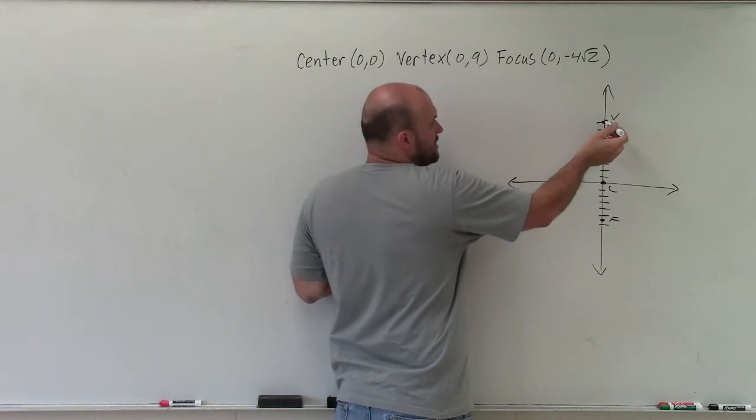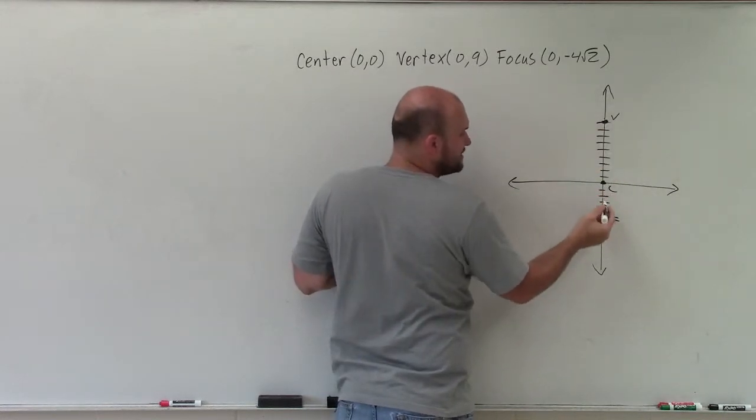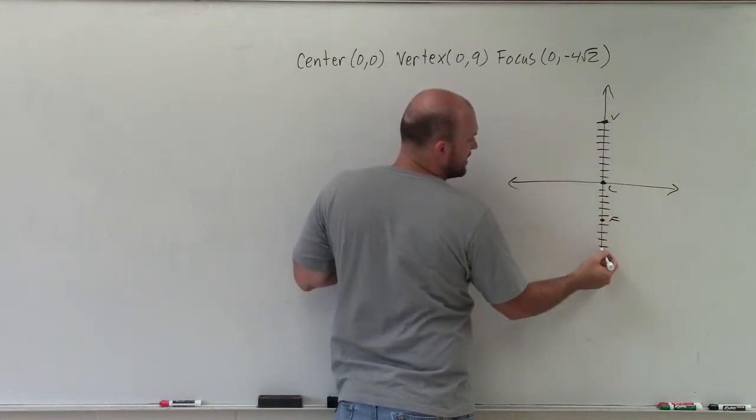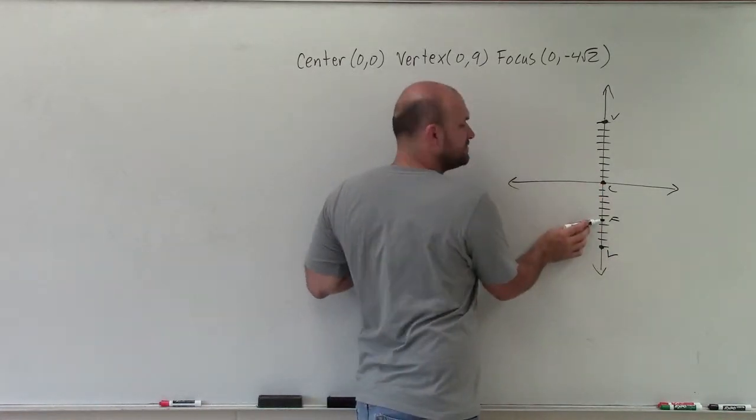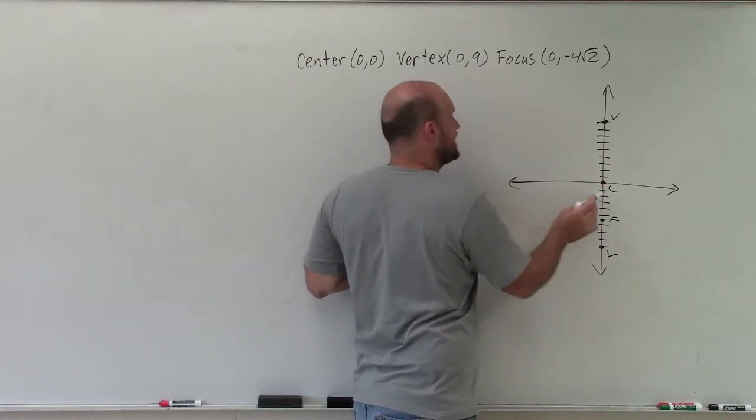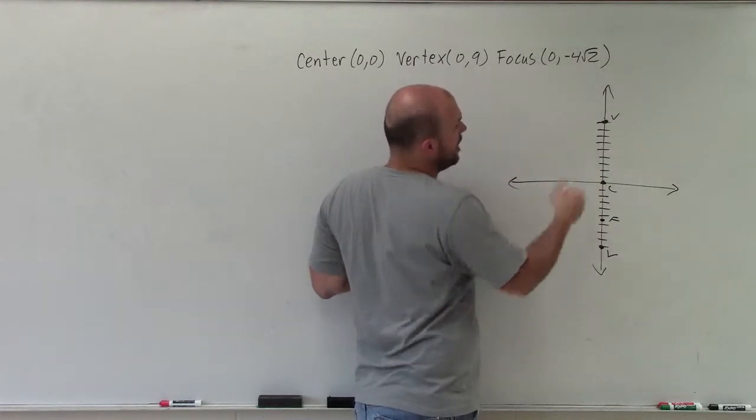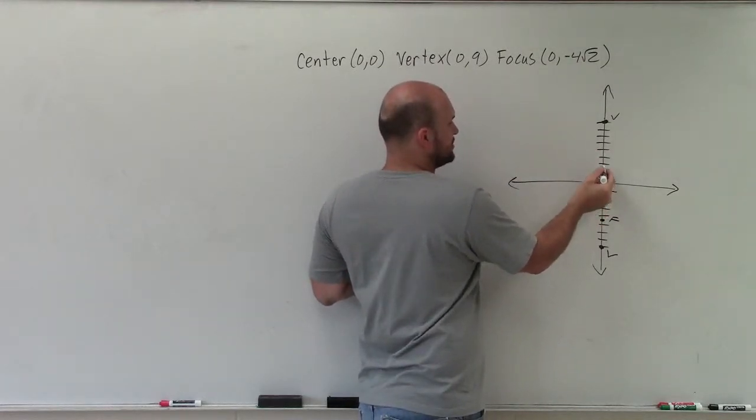So just because I went up 9 to find one vertex, I can go down 9 to find my other vertex: 6, 7, 8, 9. Then since I went down 4√2 to go to my one focus, I can go up 4√2 to get to my other one: 1, 2, 3, 4, 5.